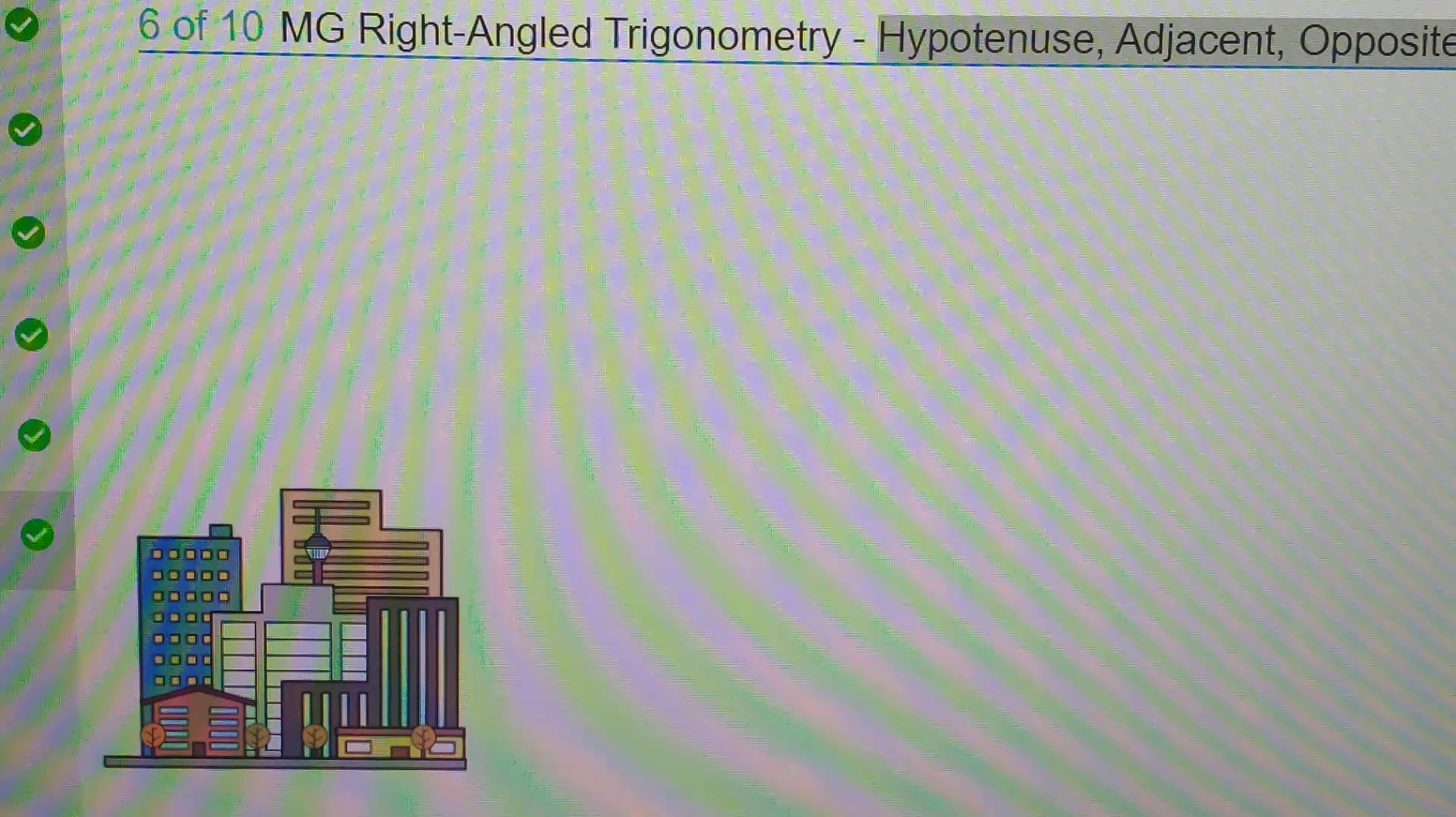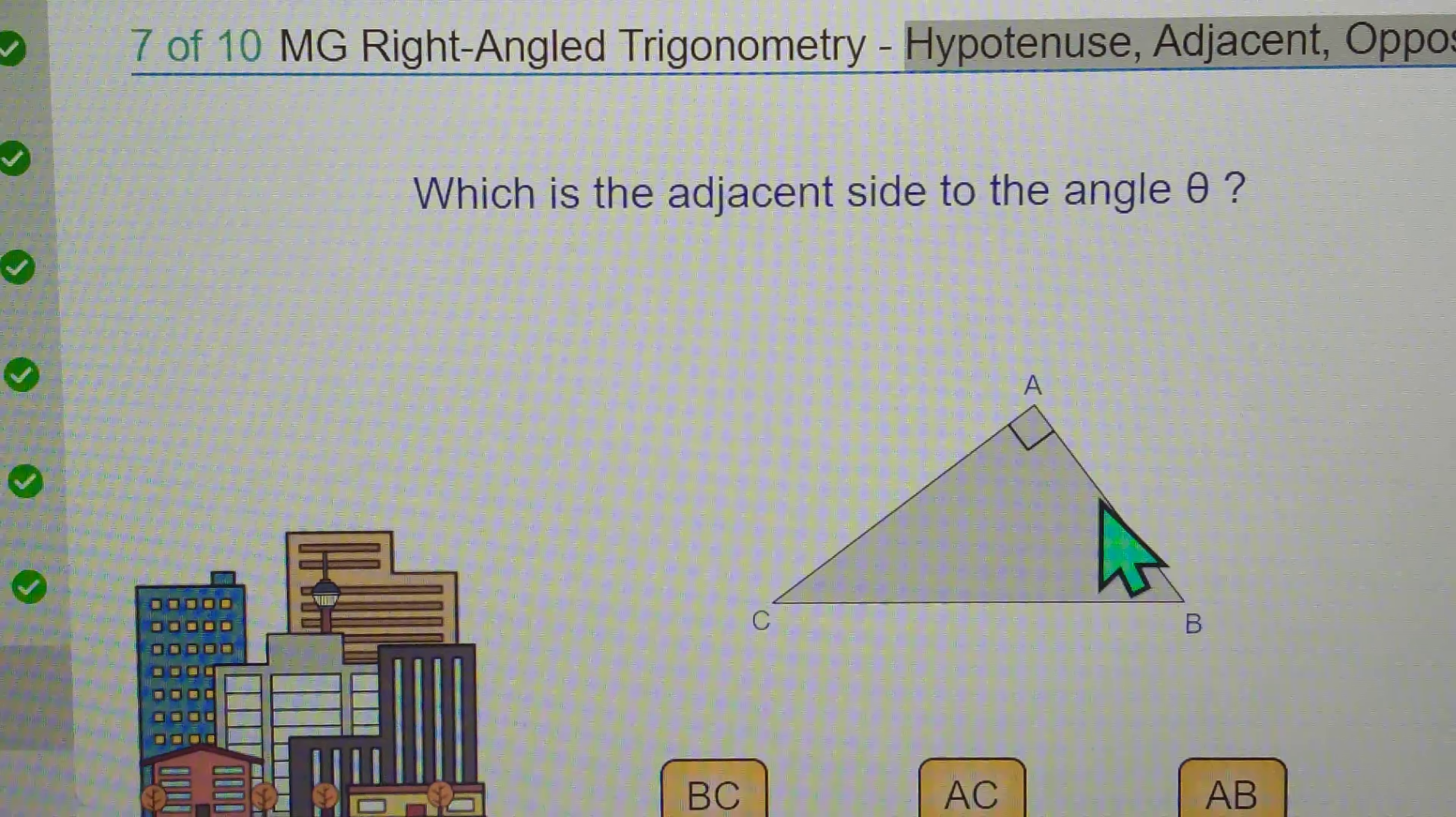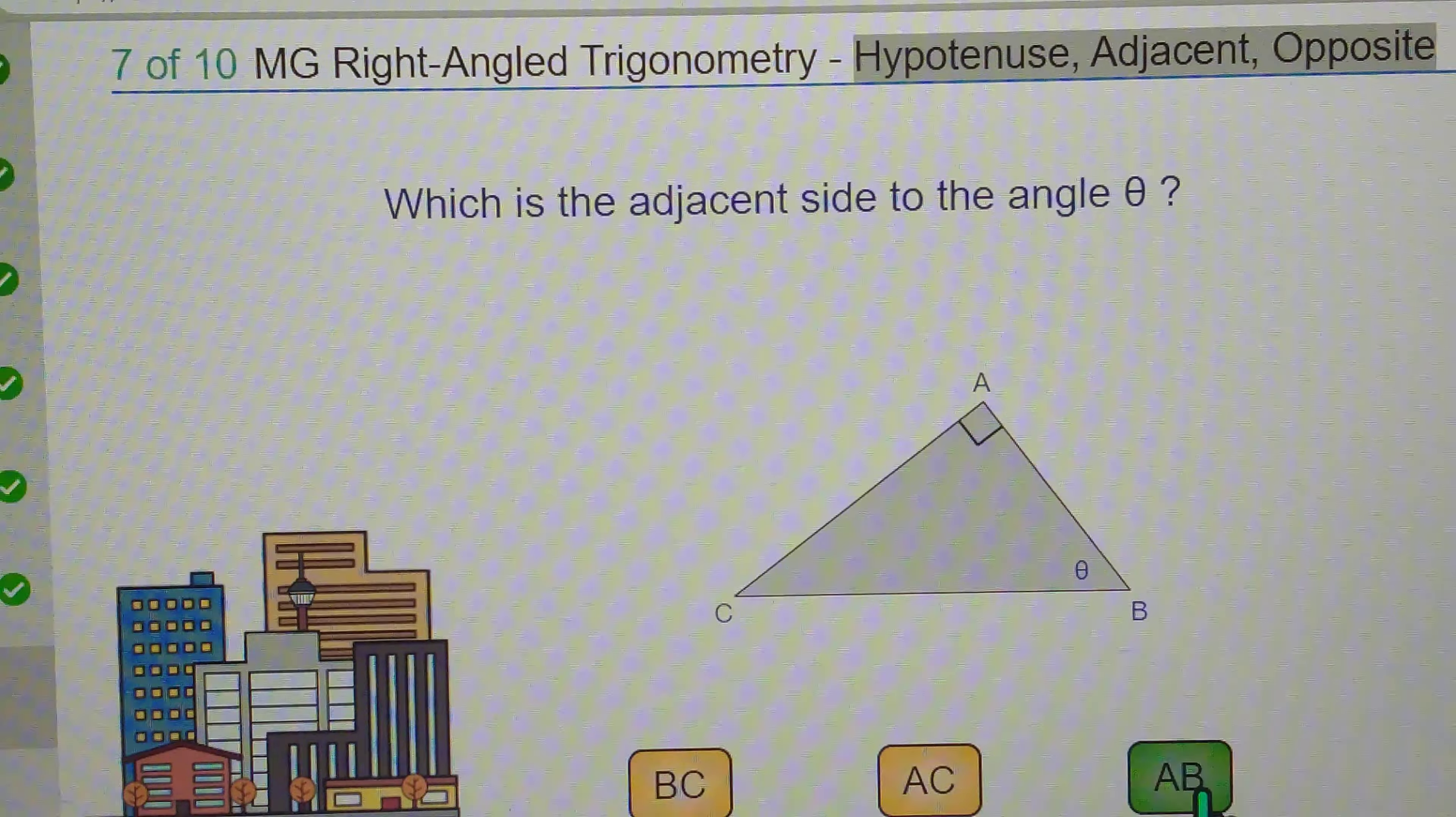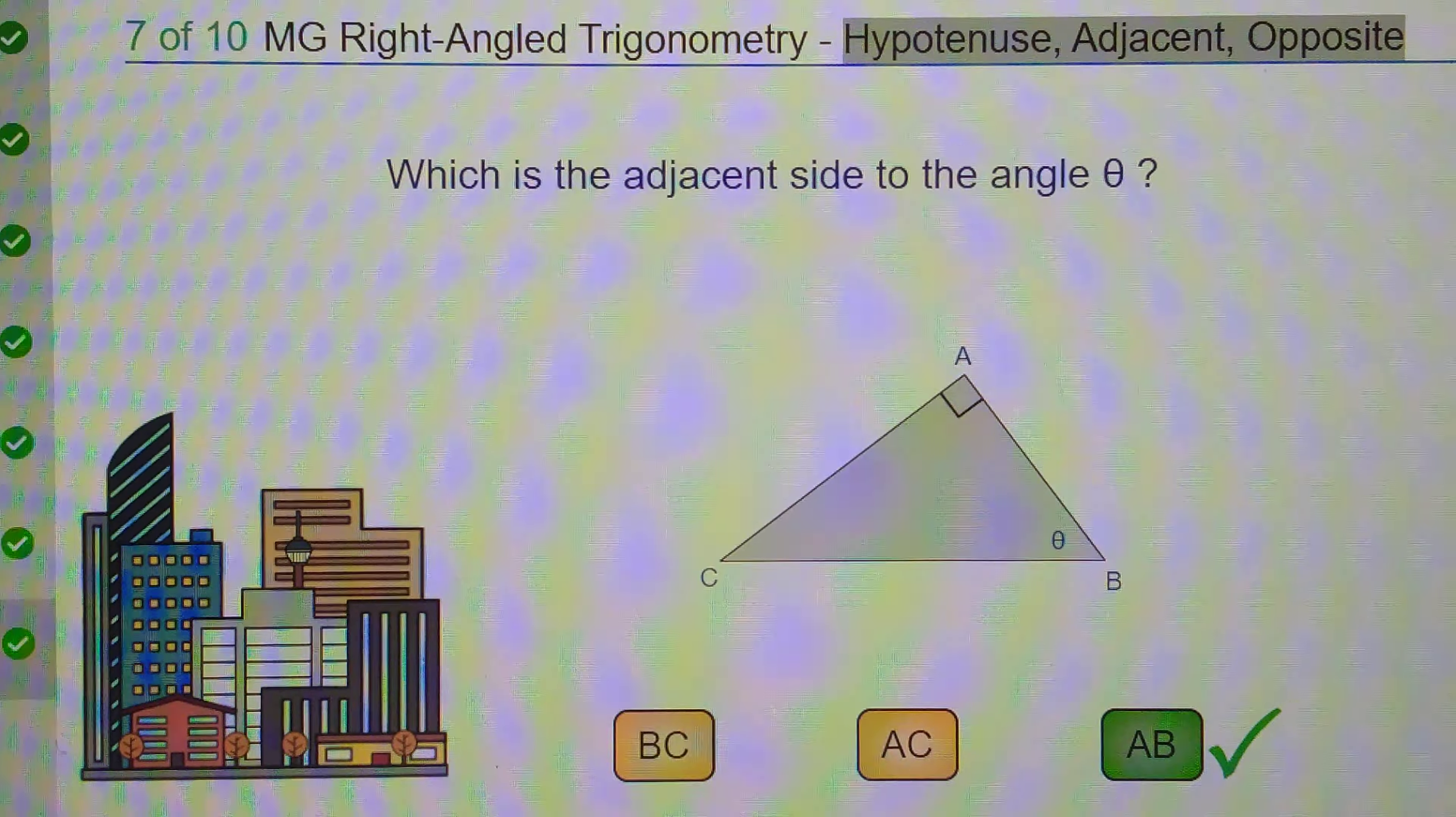Which is the adjacent side? I know the adjacent side already. It's not the opposite. It's not the hypotenuse. It's the adjacent side. So it's AB. You see? AB stings. So it's correct.